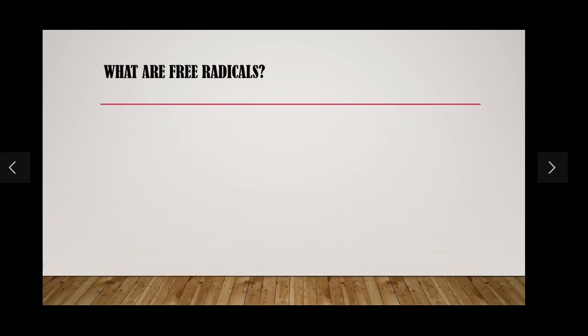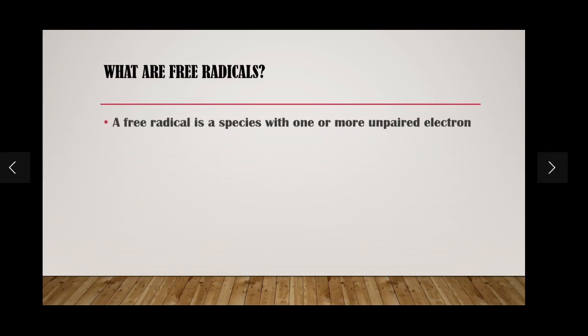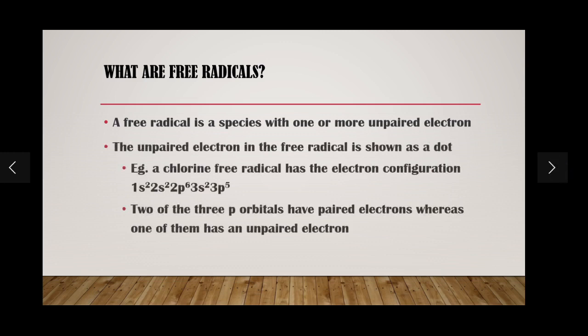The main question is: what are free radicals? Free radicals are a species with one or more unpaired electrons. Basically, we're talking about an electron in the outermost orbital. For example, lithium has three electrons and its outermost sub-shell has an unpaired electron. We can say almost every element except Group 8 elements are free radicals.